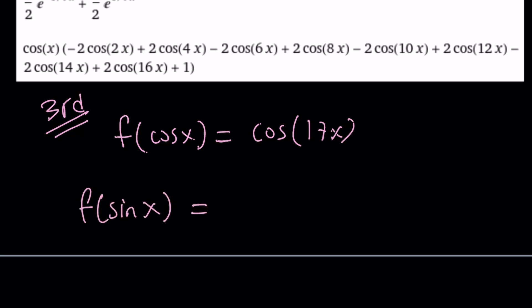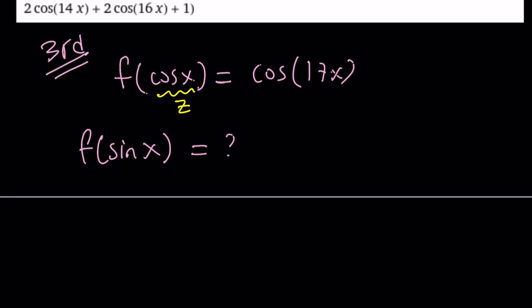We already know the answer, but let's just pretend we don't and see if we can find it a little differently. So, this time, since I want to find f of something, I should be getting an expression for the function f. So, let's go ahead and do this. Let's replace cos x with something. How about z? z doesn't have to be complex in this case.